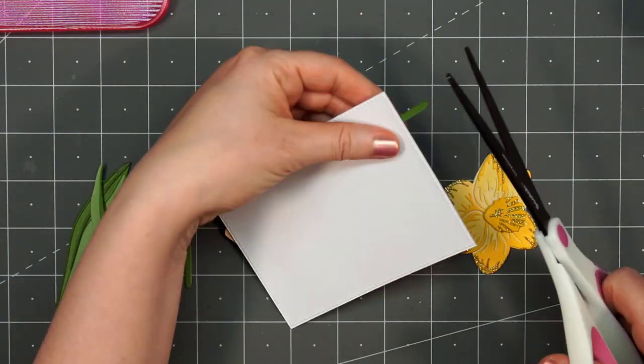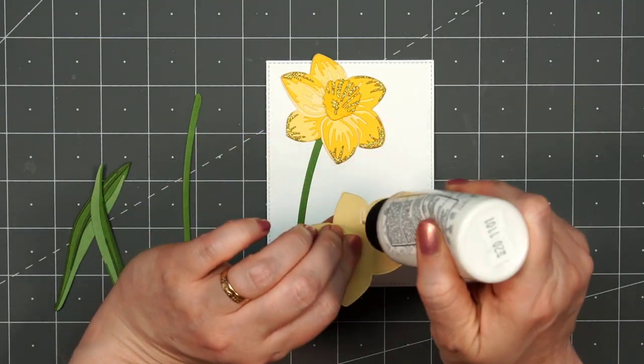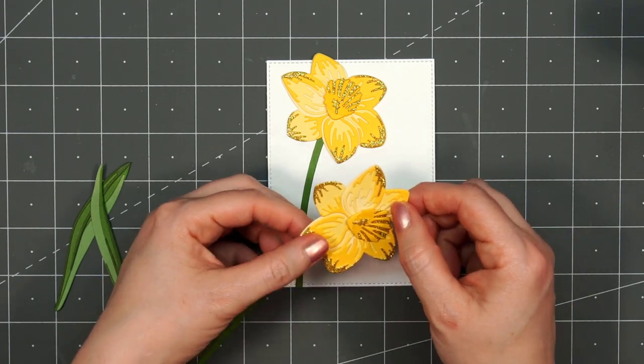Then the extra part of the stem I just flipped over that panel and trimmed it off. I don't mind the little petal that's going off the edge of that rectangle. I'll leave that on.